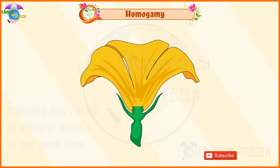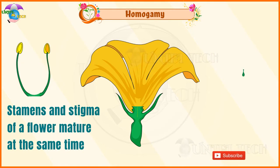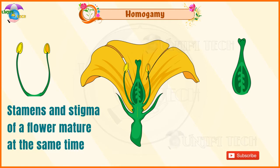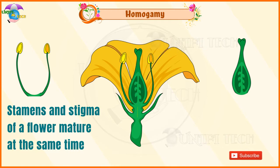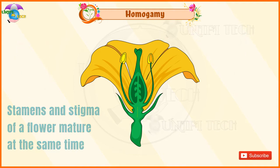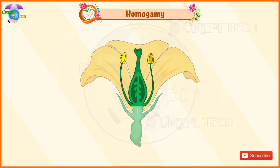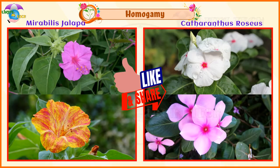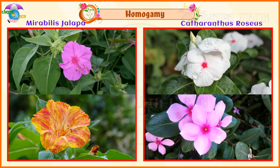Homogamy: When the stamens and stigma of a flower mature at the same time, it is said to be homogamy. It favors self-pollination to occur. Examples: Mirabilis jalapa, Catharanthus roseus.